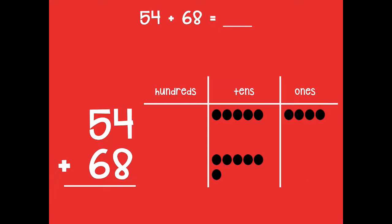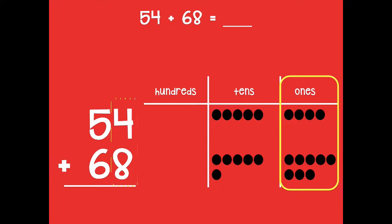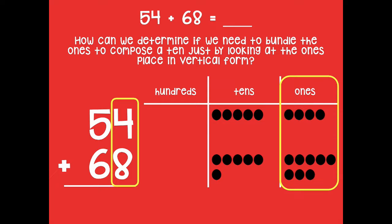Here's my place value chart. To model 54 I need five tens and four ones, and to model 68 I need six tens and eight ones. We always start adding in the ones place. To determine if we need to bundle and compose a ten, we look at the ones place in vertical form: eight only needs two more to make ten, and there are four ones — that's more than two. Or we can just say eight plus four equals twelve, which is one ten and two ones.